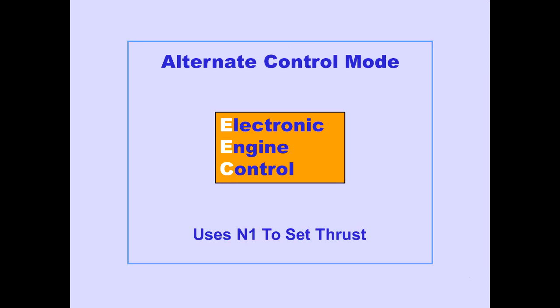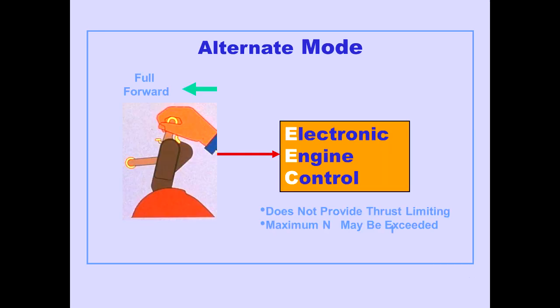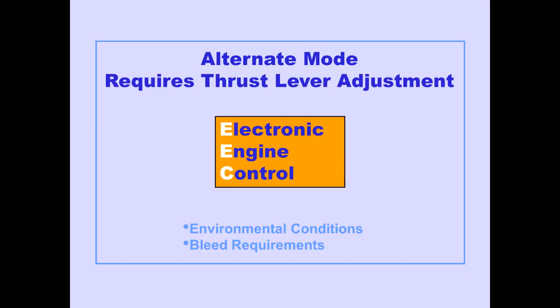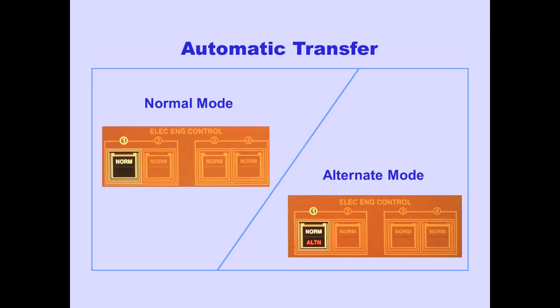In the alternate control mode, the EEC uses N1 RPM to set thrust. However, the EEC does not provide thrust limiting, and maximum N1 may be exceeded as the thrust lever nears the full forward position. In the alternate mode, the EEC requires thrust lever adjustments to maintain desired thrust as environmental conditions and bleed requirements change. The EEC automatically transfers control from normal mode to alternate mode if a fault is detected and the EEC cannot control the engine in the normal mode.